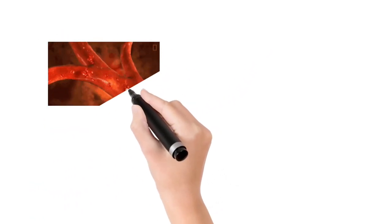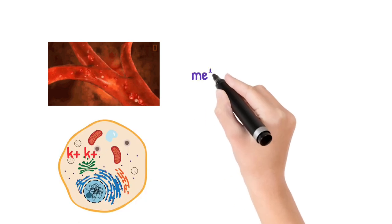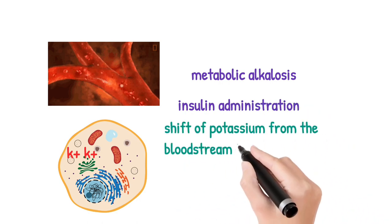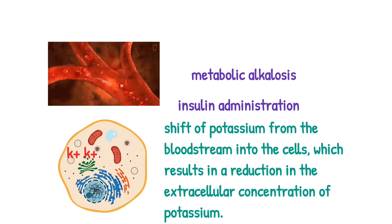Redistribution of potassium from the extracellular fluid to the intracellular fluid can occur in several conditions like metabolic alkalosis or insulin administration. This causes a shift of potassium from the bloodstream into the cells, which results in a reduction in the extracellular concentration of potassium.